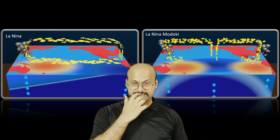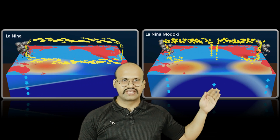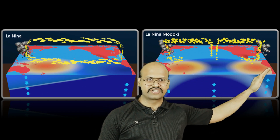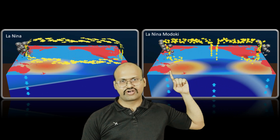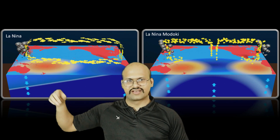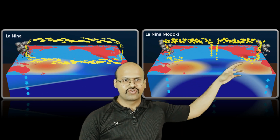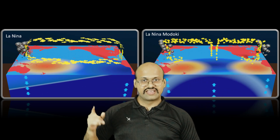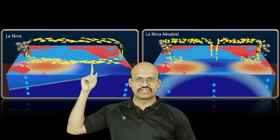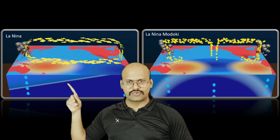Now comparing La Niña and La Niña Modoki: in normal La Niña the wind starts from South America and extends to Australia, rising over Australia and giving very heavy rainfall. In La Niña Modoki, the wind starts from the central Pacific and flows toward both South America and Australia, rising over both regions, giving rainfall over both South America and Australia. These wind currents drag cold water from the coastlines toward the central Pacific, and warm water is again accumulated more toward the Australian region, changing the thermocline accordingly.